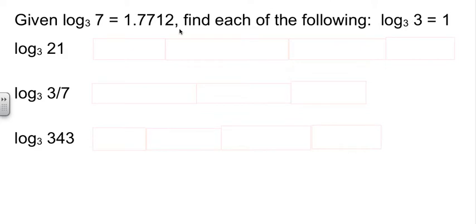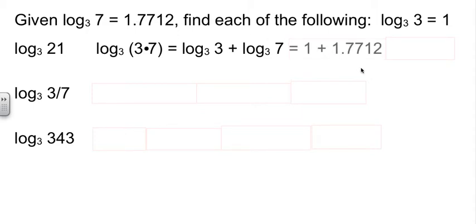So we're going to use this information along with the given information to figure out how to find log base 3 of 21. Well, how can I rewrite 21 so that it's some combination of 7s and or 3s? 21 is 3 times 7. Now I have a multiplication going on. And we saw on the previous property page that a product inside the log is equal to the sum outside the logs, or two separate logs. So log of 3 times 7 becomes log of 3 plus log of 7. Log of 3 of 3 is 1. Log 3 of 7 is 1.7712. So we'll substitute those values in, and then a little simple arithmetic finishes the problem.